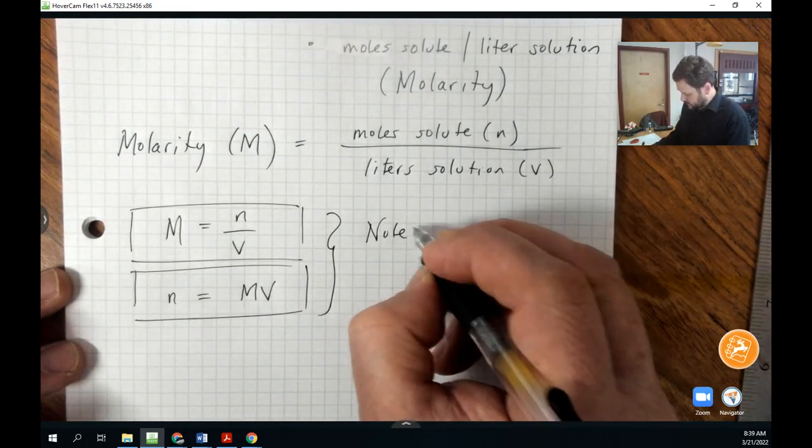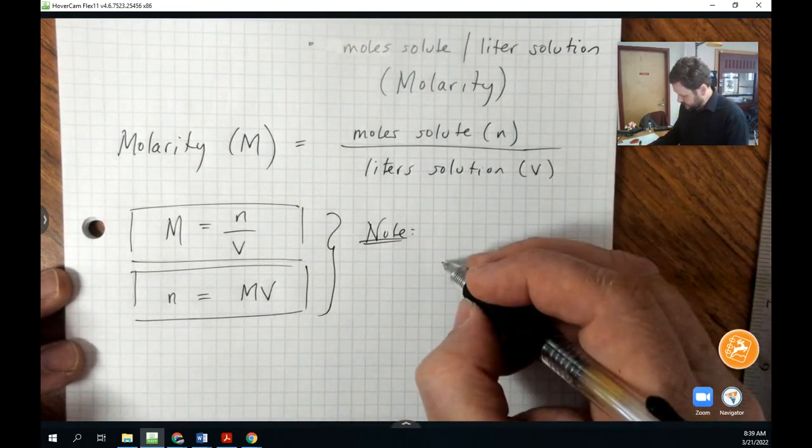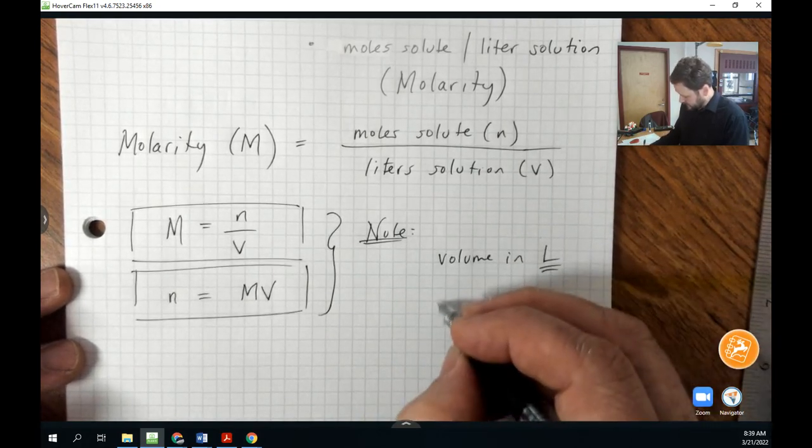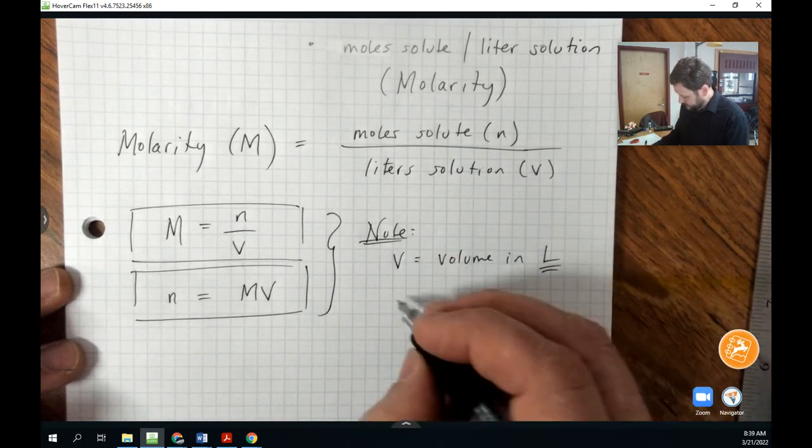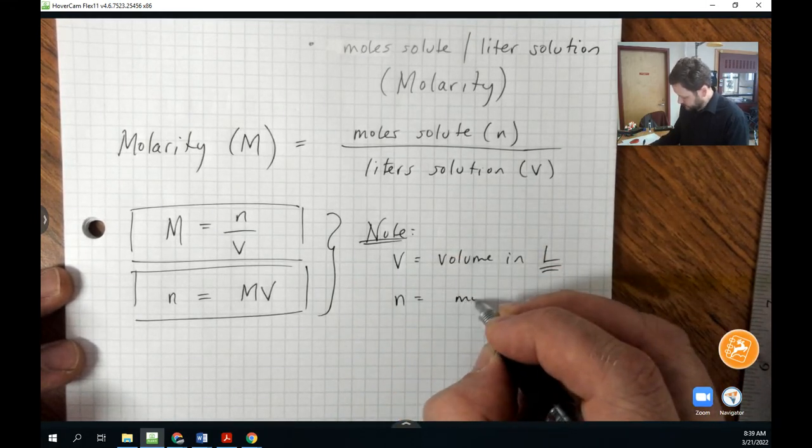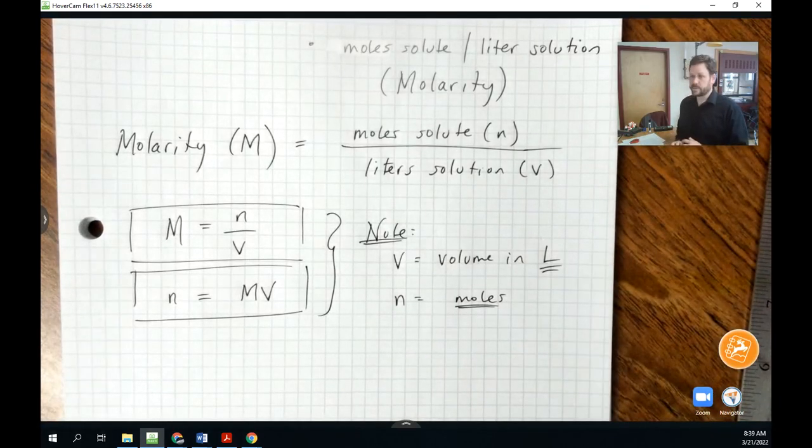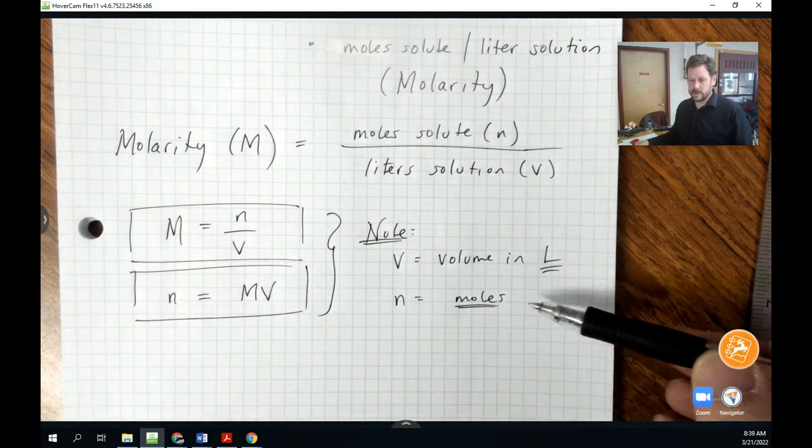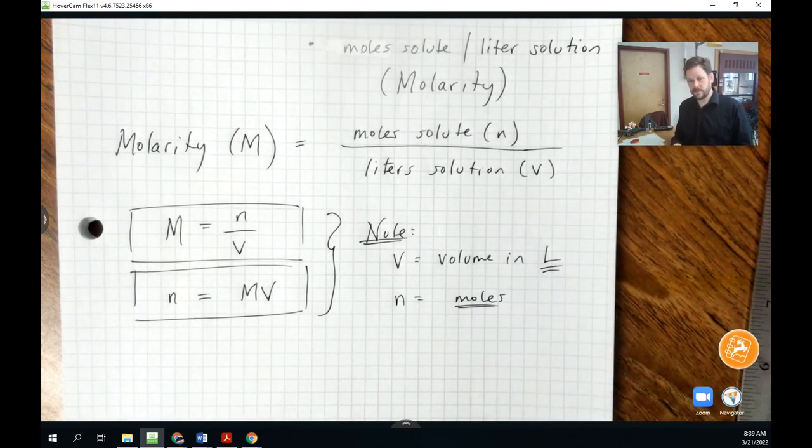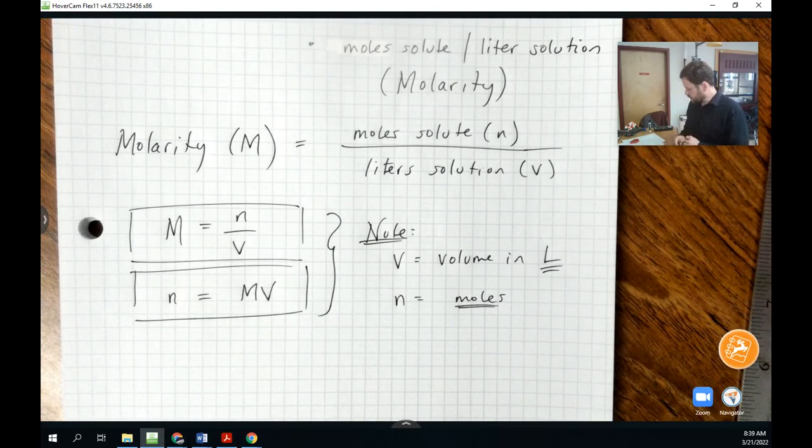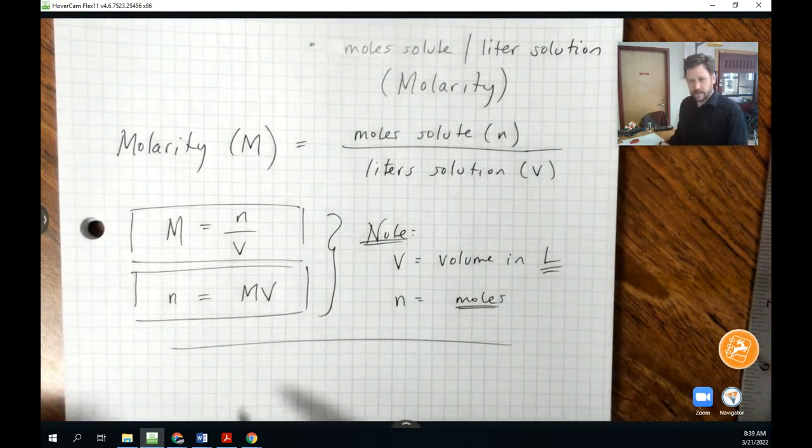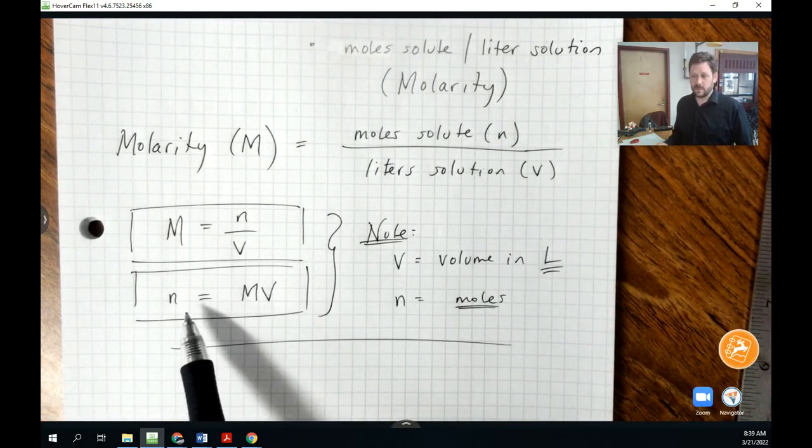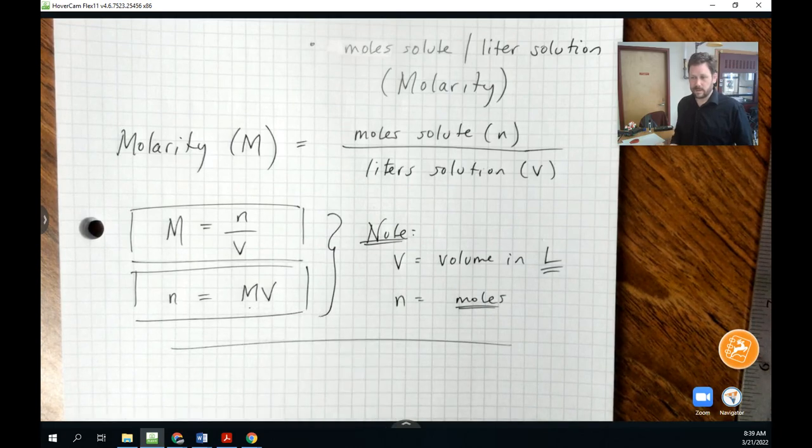But in both of these cases, note that your volume must be in liters. And n must be in moles, not grams. Your volume can't be in milliliters. It has to be in liters. And this amount of solute has to be in moles. So we're going to do some practice with these formulas here. But this is the definition of molarity. And this is how you can calculate the number of moles in a solution if you know its molarity and its volume.